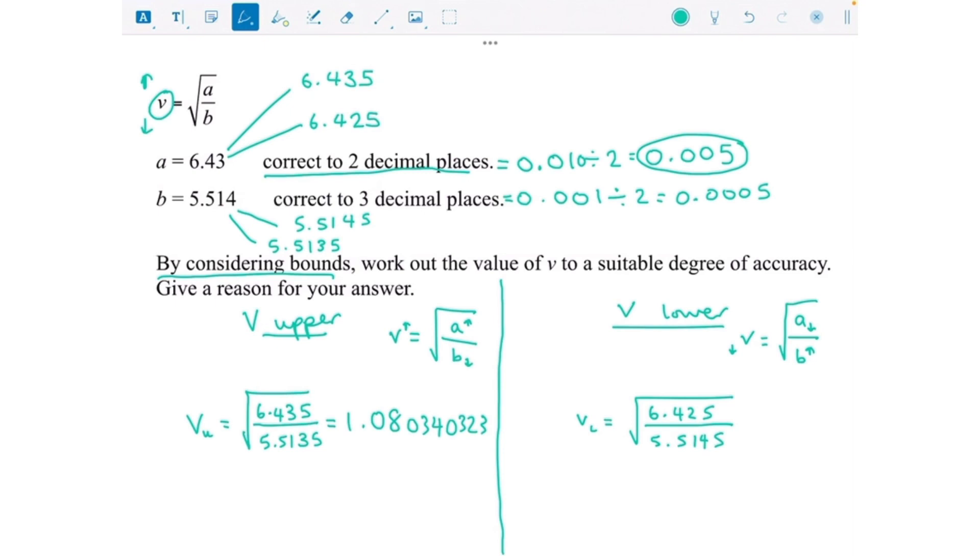I'm just going to change that to be the lower bound calculation, so putting in that calculation on the right, 6.425 over 5.5145, and that is 1.079402 and so on.